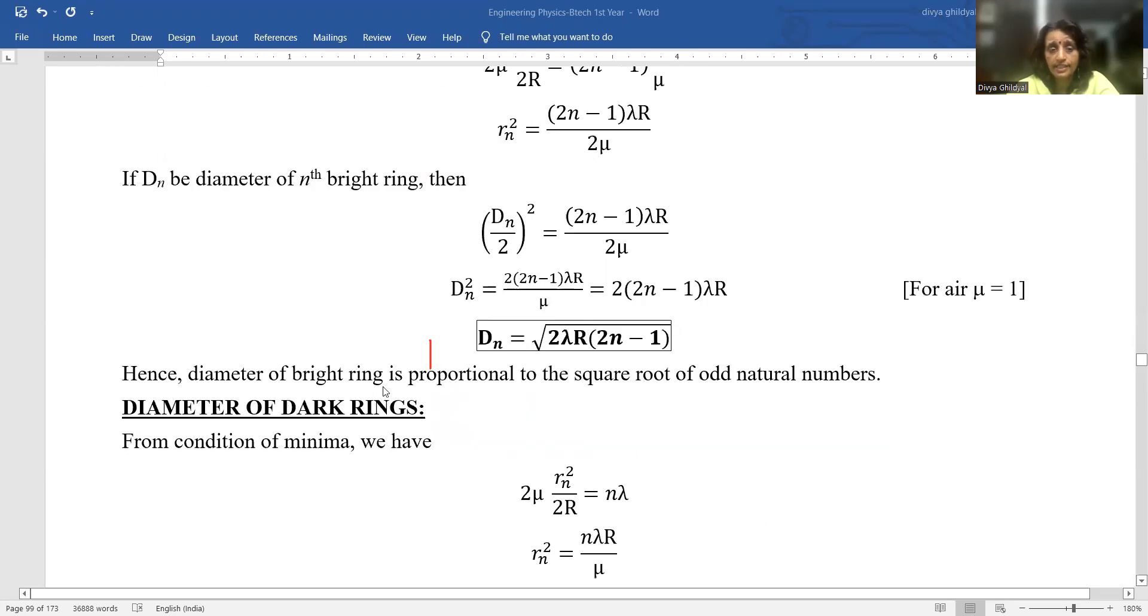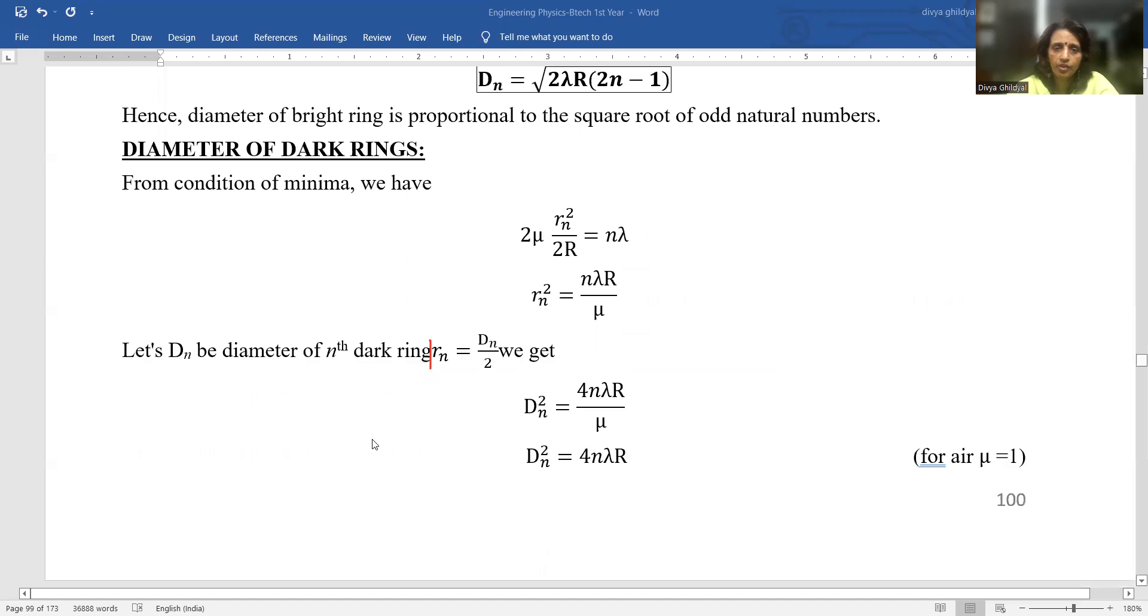As you can see, diameter of bright ring is proportional to the square root of odd natural numbers. This was once asked in section A regarding the square root combination.